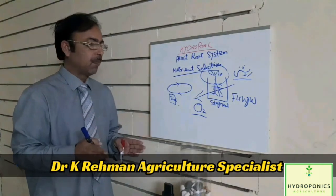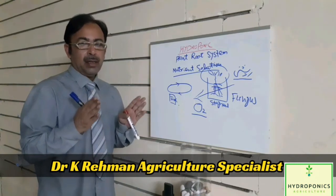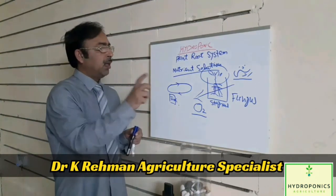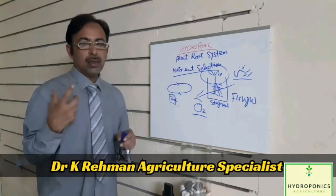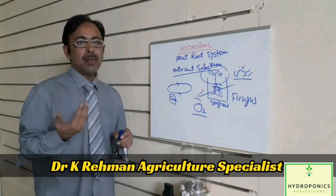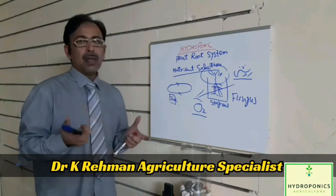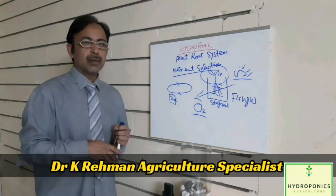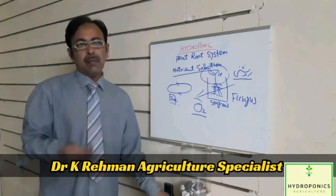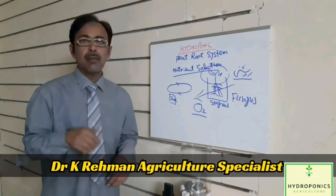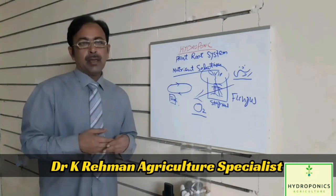We can use artificial means of oxygen supply in a closed container system where the nutrient solution is not circulated. In the other system, where the nutrient solution is circulated from the tank to the growing media, oxygen is obtained from the air. Keep in mind the two key factors for good root system health: don't allow sunlight to penetrate in the root zone, and enrich the water or nutrient solution with oxygen.